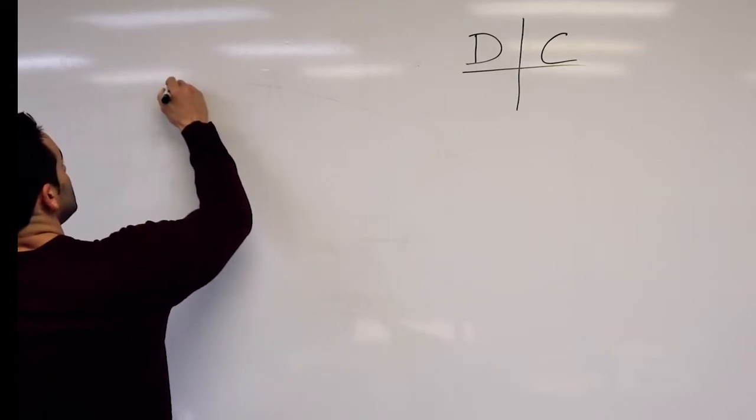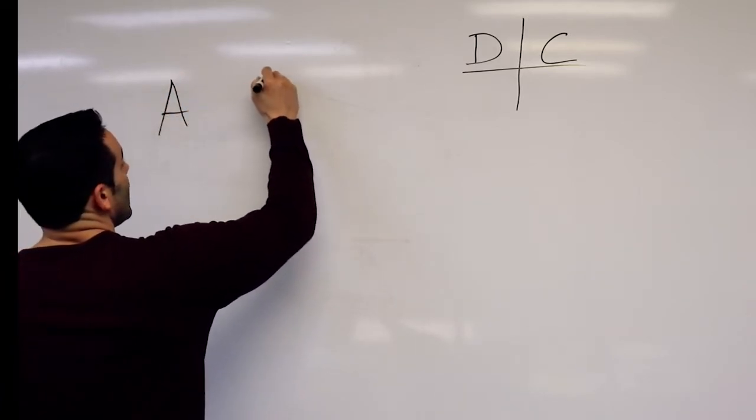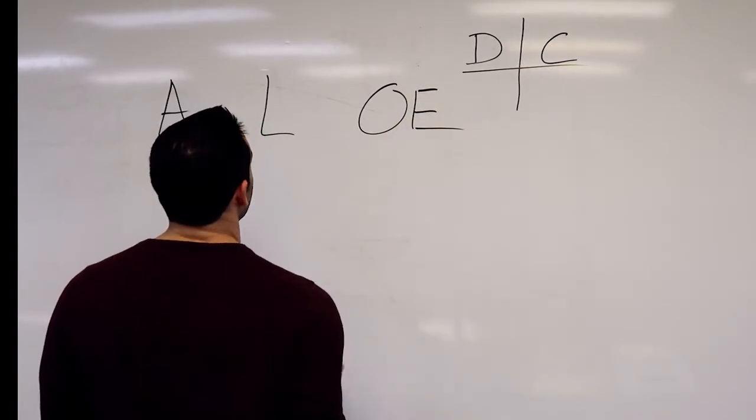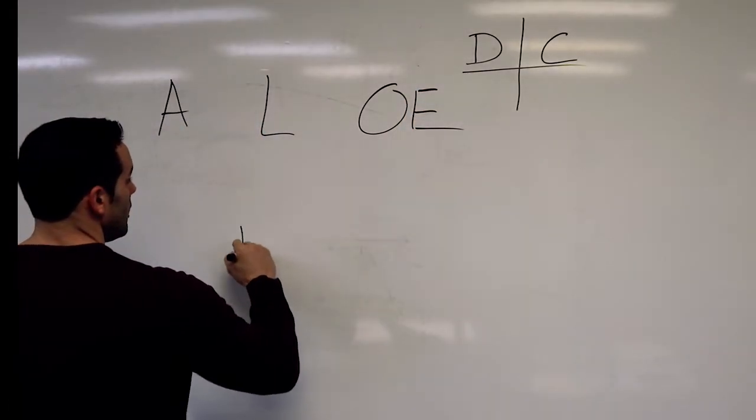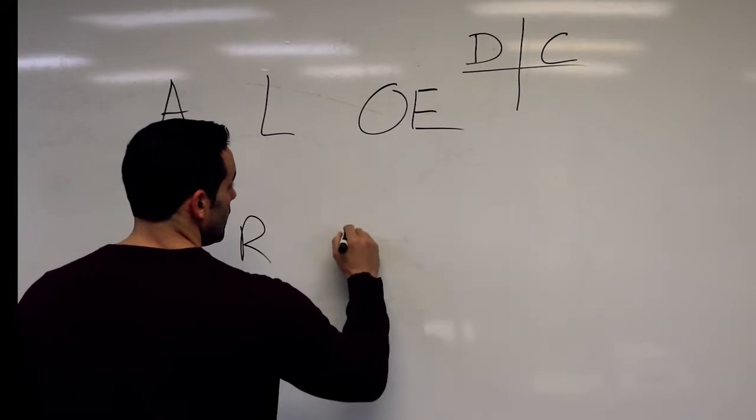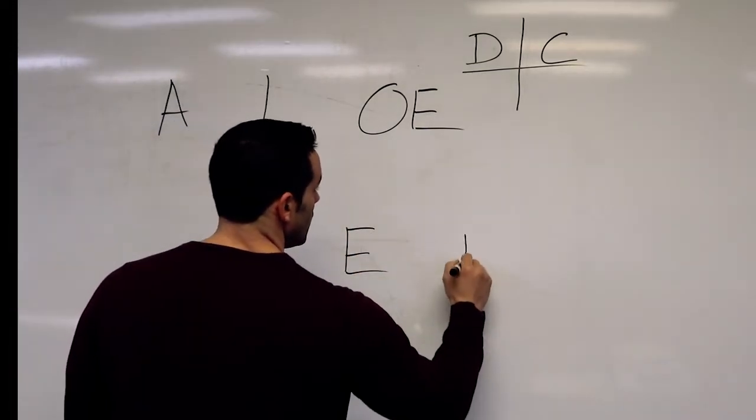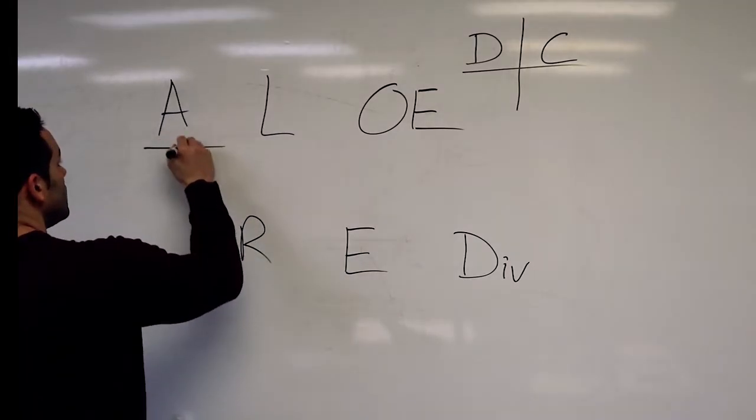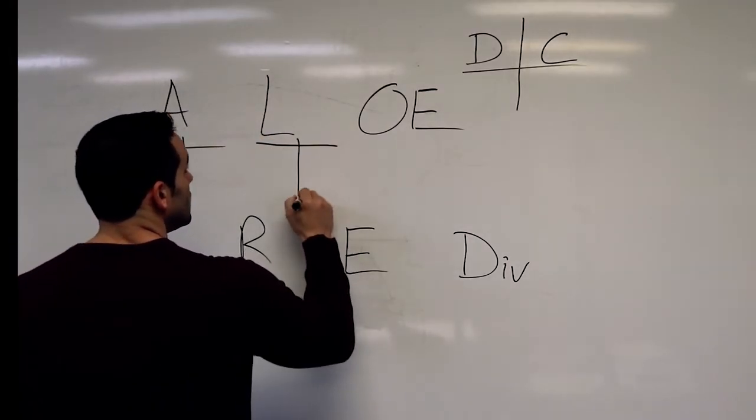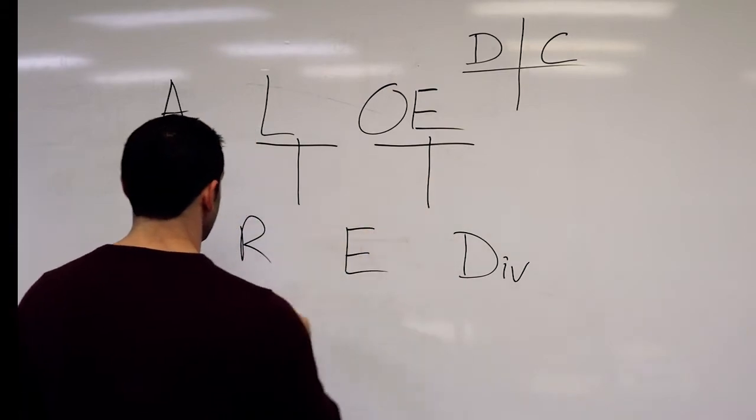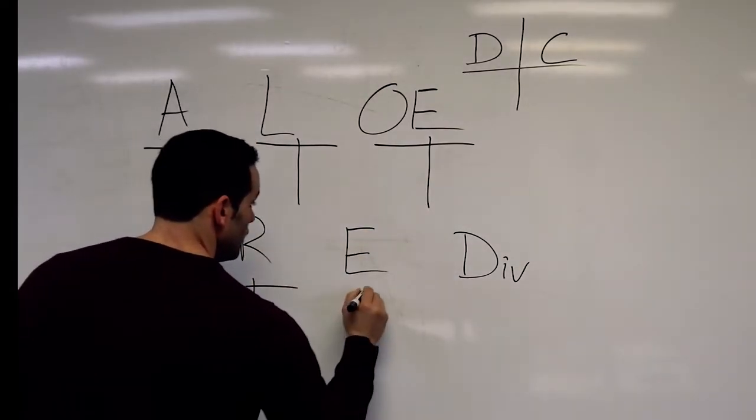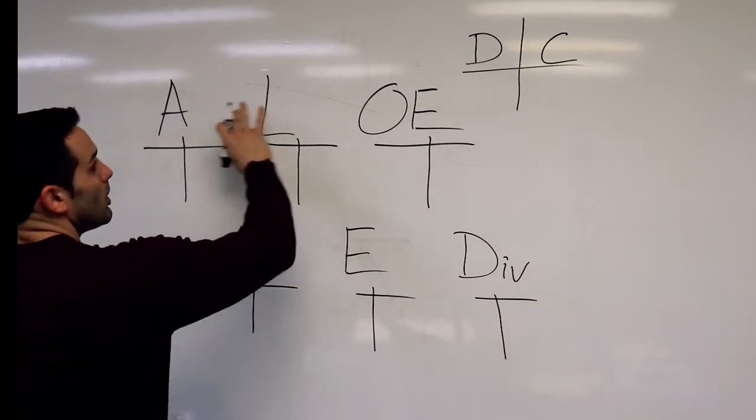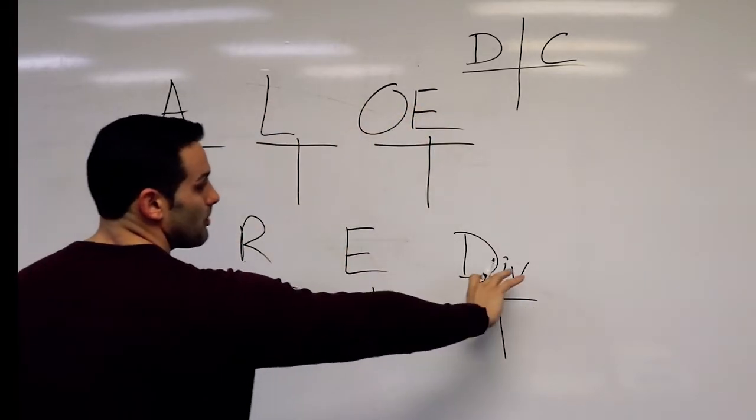Assets, liabilities, owner's equity, Allo, revenue, expense, dividends. And we'll draw our T-accounts for each type of account. And you'll notice that the top accounts, these are permanent accounts. These are temporary accounts.